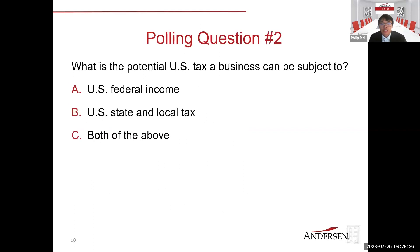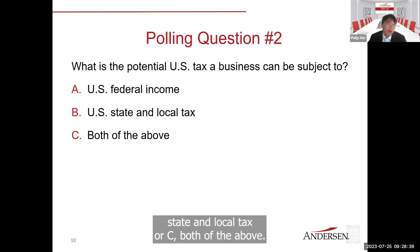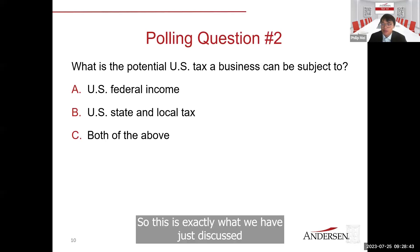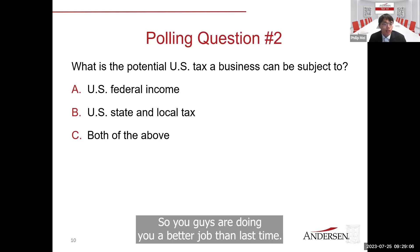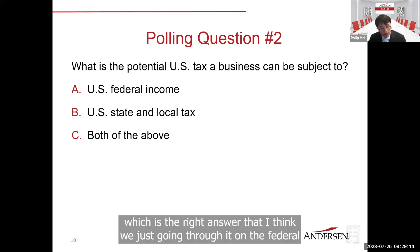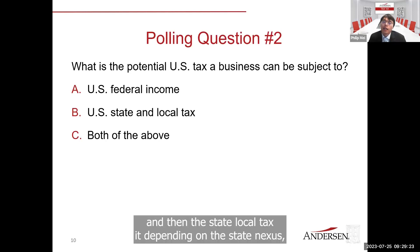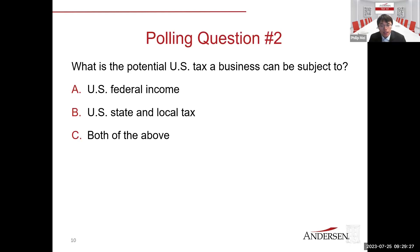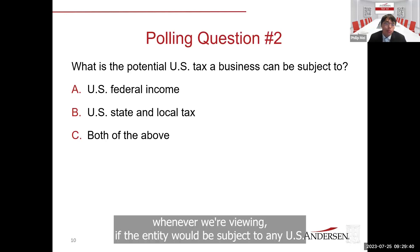Polling question two: What is the potential US tax a business can be subject to? A — US federal income tax; B — US state and local tax; or C — both of the above. The answer is C, both of the above — 97% of the audience answered correctly. For federal income tax purposes, we focus on permanent establishment; for state and local tax, we look at state nexus. These are two different criteria that any foreign business must consider when reviewing whether it would be subject to US taxation.